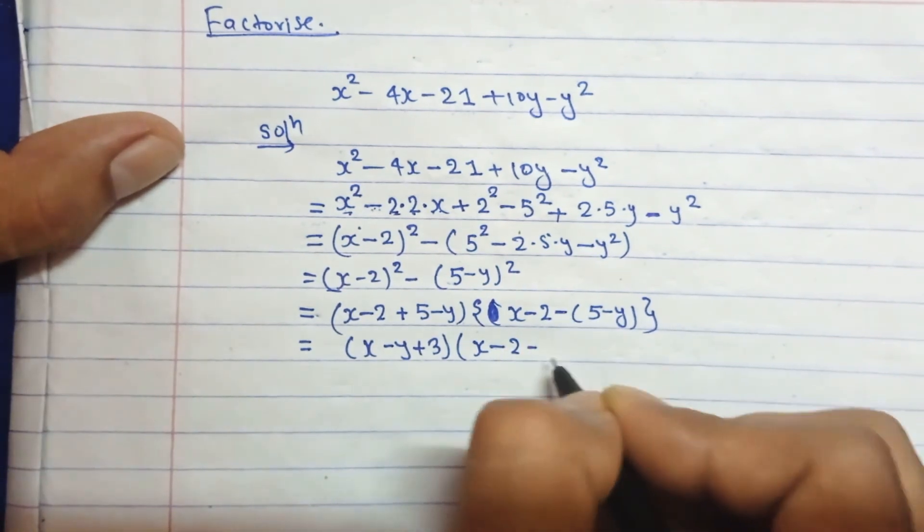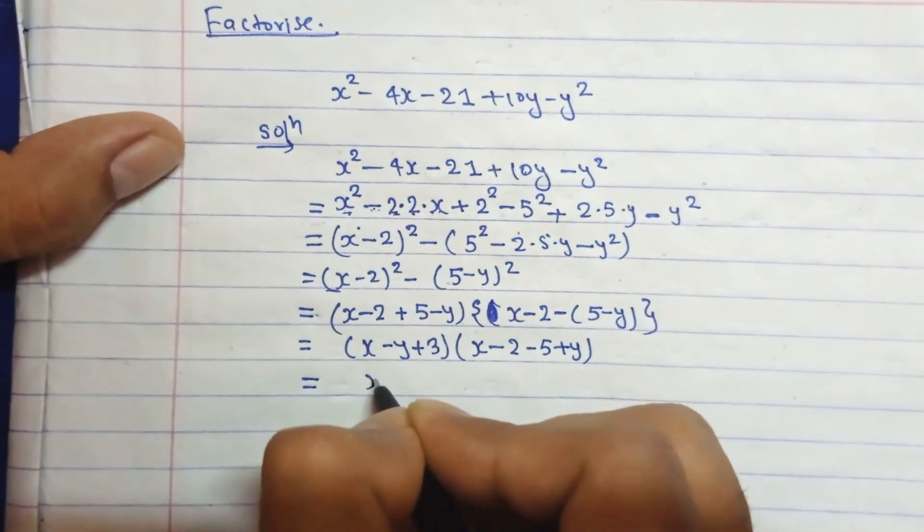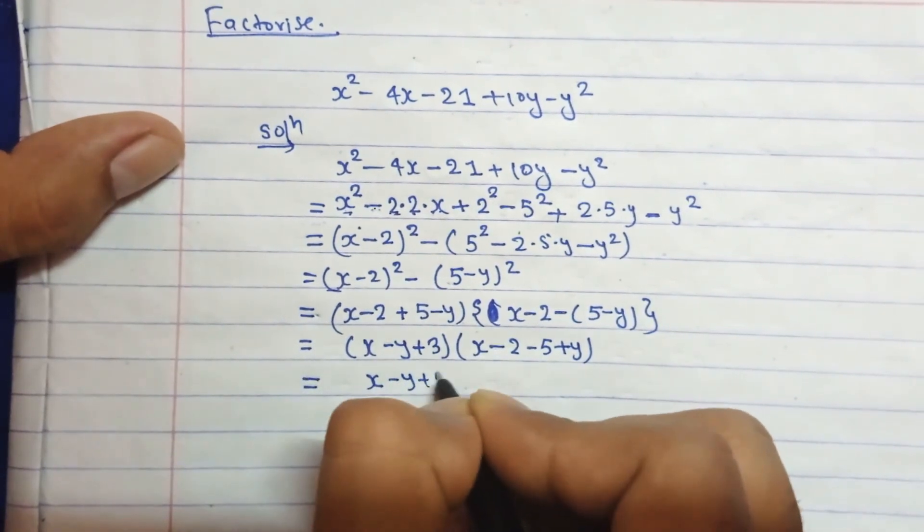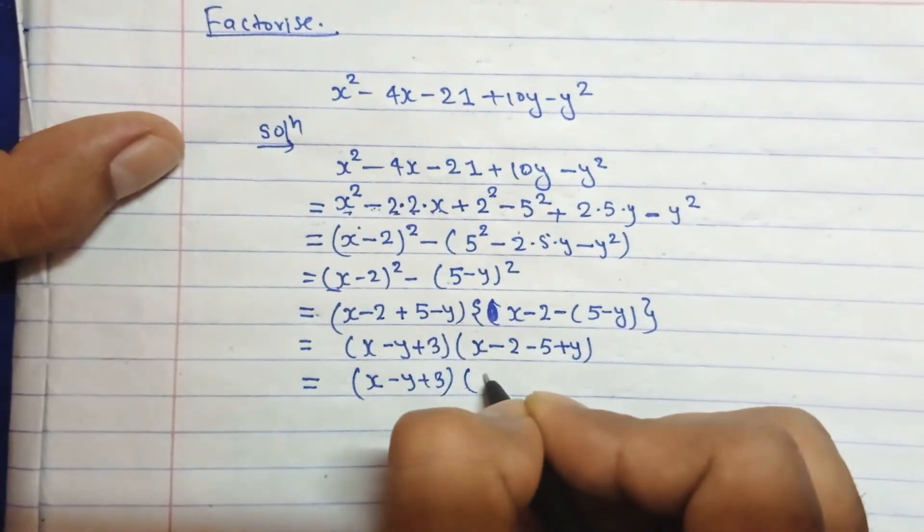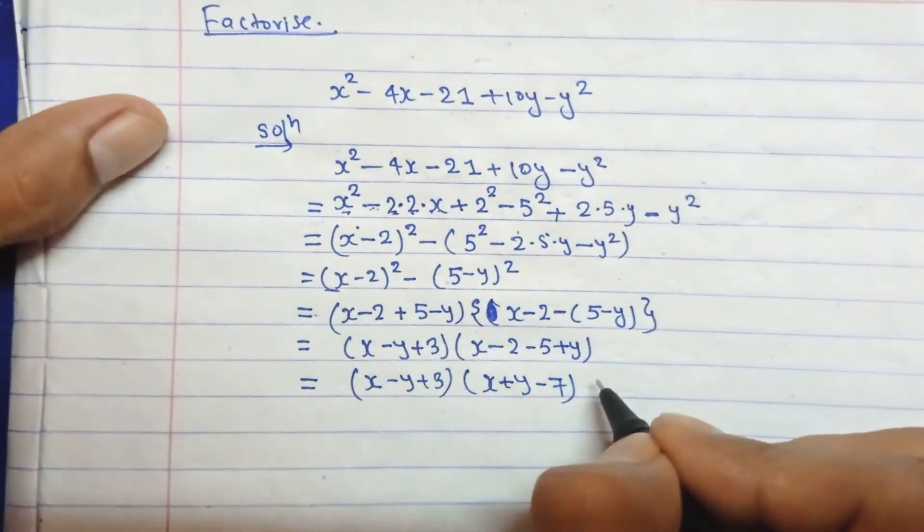And finally you can get here the answer (x + y - 7) times (x - y + 3). That's it.